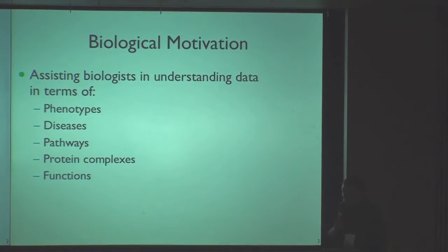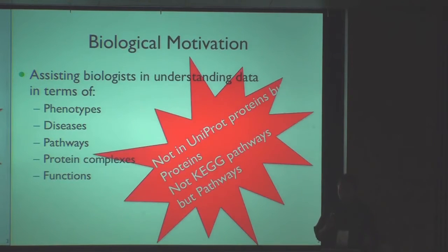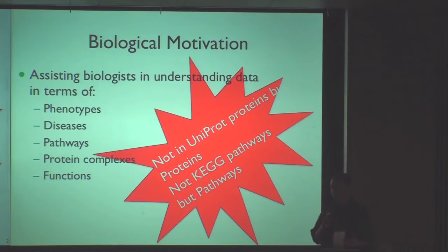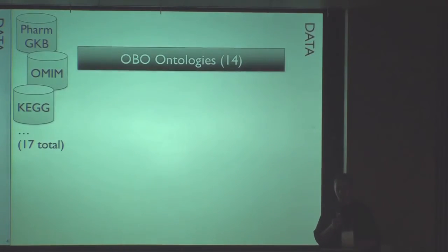The bottom line here is that we're trying to help biologists solve biological questions. They're trying to understand data in terms of phenotypes, diseases, pathways, protein complexes, functions, etc. When biologists frame these questions, they're not saying I need to understand my system in terms of KEGG pathways — they're saying I need to understand what pathways are actually going on. They're not concerned about UniProt proteins; they're concerned about proteins. Unfortunately, the current state of the art for most of our tools and systems is just a disparate view of everything.